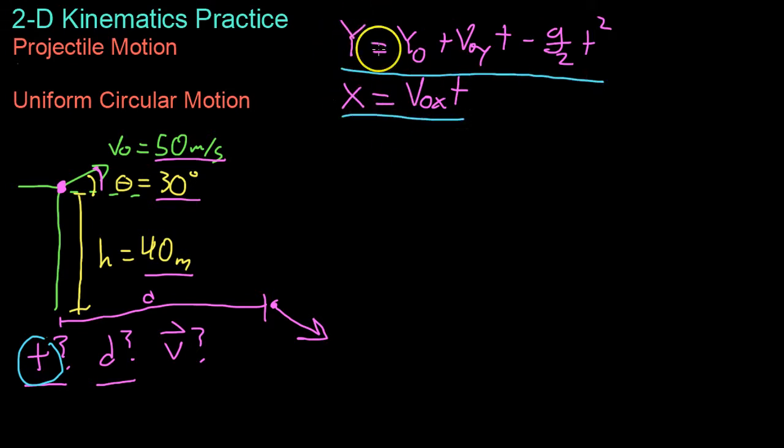Now from here we know its initial height y0 is 40 meters. We know its initial velocity is 50 meters per second and we know the g value. So with all that known we can basically solve for the time it takes for the projectile to hit the ground. So when it hits the ground it will be at zero meters. So we'll set y equals zero.